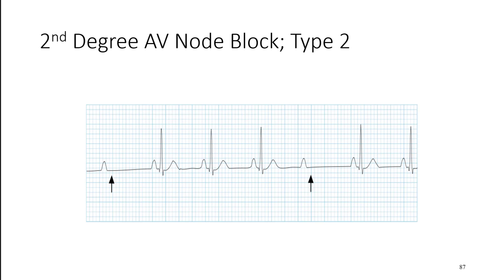A second-degree AV node block Type 2 is a little bit more concerning than Wenckebach. Both are concerning, but this is more so. This occurs when there is no precipitating prolongation — though these patients often still have borderline prolonged PR intervals. In this example it's actually a little bit normal.